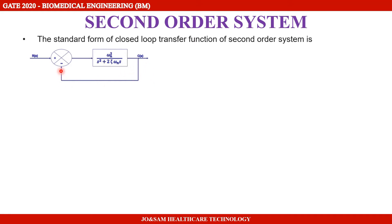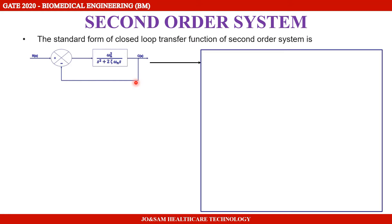First, we need to eliminate the closed loop and solve these equations. R of S is the input and C of S is the output. Now we need to eliminate the loop.